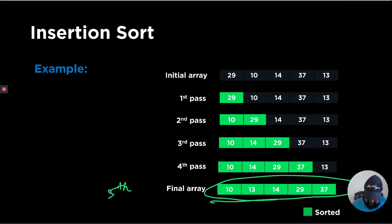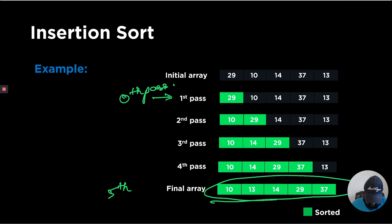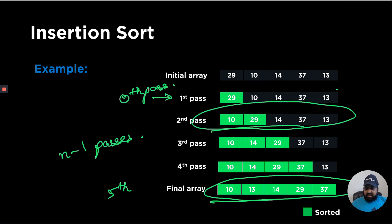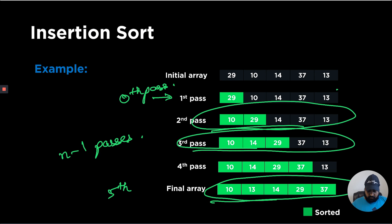If the algorithm's initial state is called the 0th pass, as some books prefer, there will be n minus 1 passes; otherwise there will be n passes. Either approach is fine — what matters is the ordering. For example, if given an array and asked what it looks like after one pass of insertion sort, you should be able to answer correctly.